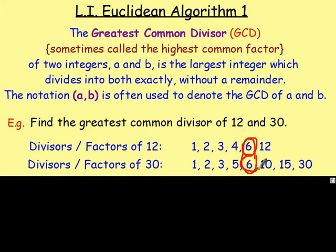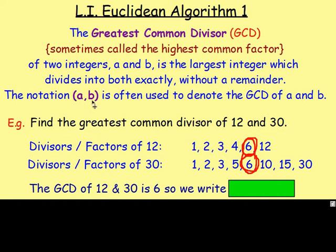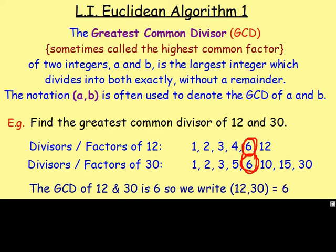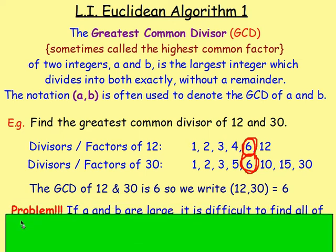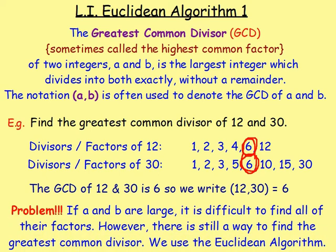There's a 6 here and there is a 6 here. There is no other number which appears in both lists that is higher. So that would be the greatest common divisor, and we write (12, 30) = 6. This seems very easy and does not seem like it should be in advanced higher maths. It would be harder if your numbers were bigger — if A and B are larger, it's often difficult to find all of their factors. To save time, there is a quick way: you can find the greatest common divisor using the Euclidean algorithm.